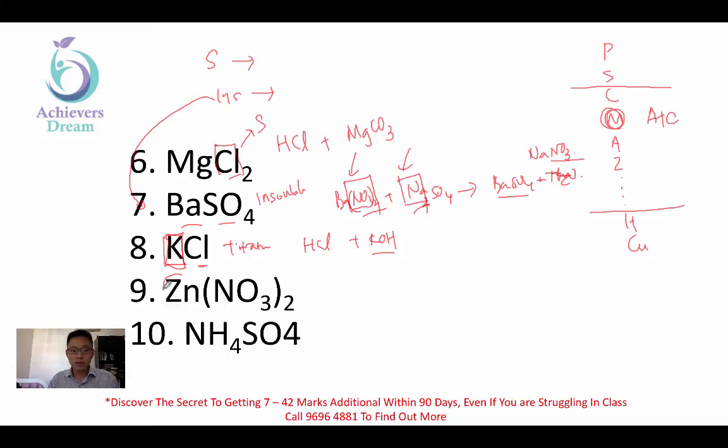Last two questions. I am going to go a bit faster. Because it is zinc, I am just going to use acid plus metal, which is zinc plus HNO3. Lastly, it is (NH4)2SO4. The formula is not correct as well. It is (NH4)2SO4.